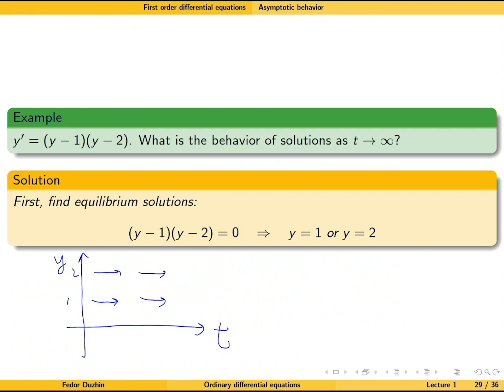Now, if y is bigger than 2, then the right-hand side of our differential equation is the product of two numbers, y minus 1 and y minus 2, but both of them are positive. So it's a product of two positive numbers. Therefore, the right-hand side is going to be positive. And a positive right-hand side means that the arrow points upwards.